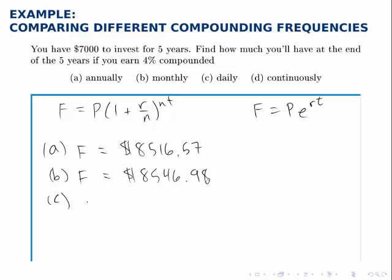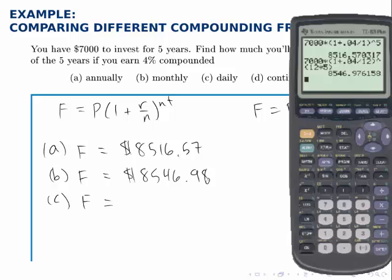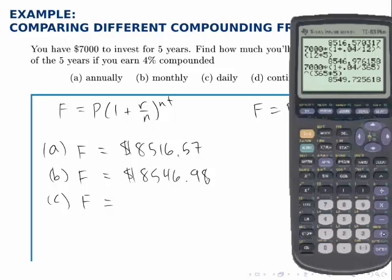One more, part c, using the same formula. Again, F equals P times 1 plus r divided by n, now is 365. It's compounded daily, close the parentheses, raised to the power of n times t. If interest is compounded daily, we find that the account holds $8,549.73.